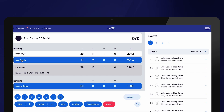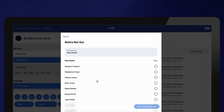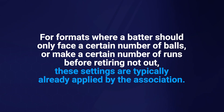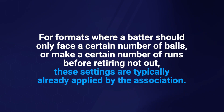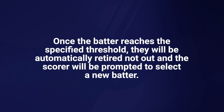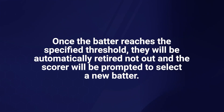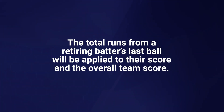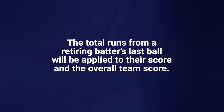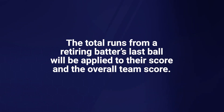If you need to retire a batter at any point, you can do so by selecting their name. Retired batters have the option to bat again later in the innings. For formats where a batter should only face a certain number of balls or make a certain number of runs before retiring not out, these settings are typically already applied by the association. Once the batter reaches the specified threshold, they will be automatically retired not out and the scorer will be prompted to select a new batter. However, these retired batters can still be chosen to bat again if needed. The total runs from a retiring batter's last ball will be applied to their score and the overall team's score. For example, if the association has set the maximum runs to 50 and the batter is on 49 and makes a 4, they will be retired not out on 53 runs.